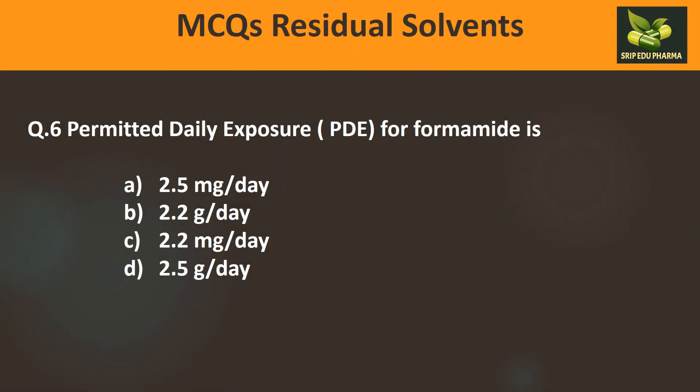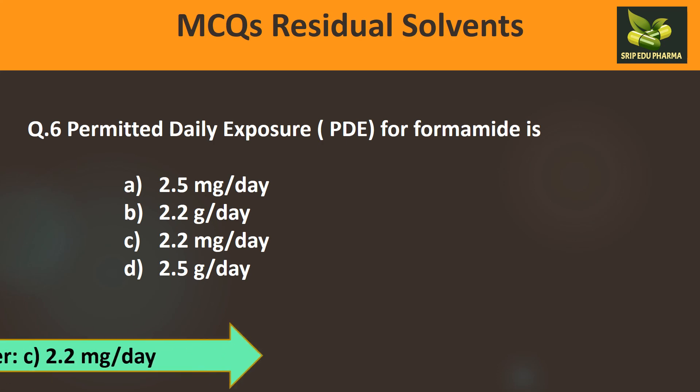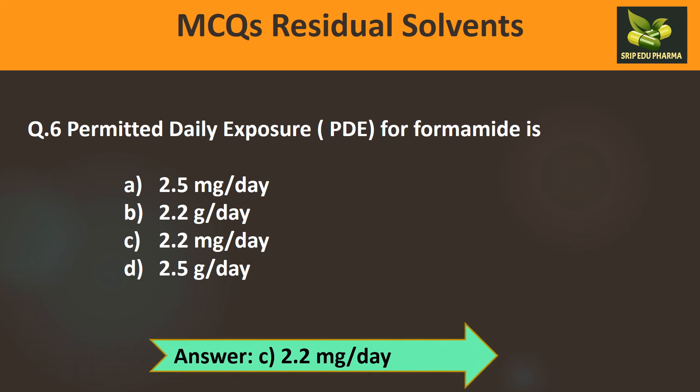Question 6: The Permitted Daily Exposure for formamide is: A) 2.5 mg/day, B) 2.2 g/day, C) 2.2 mg/day, D) 2.5 g/day. The value is 2.2, and the unit is milligrams per day — not grams. Therefore the answer is C: 2.2 mg/day.